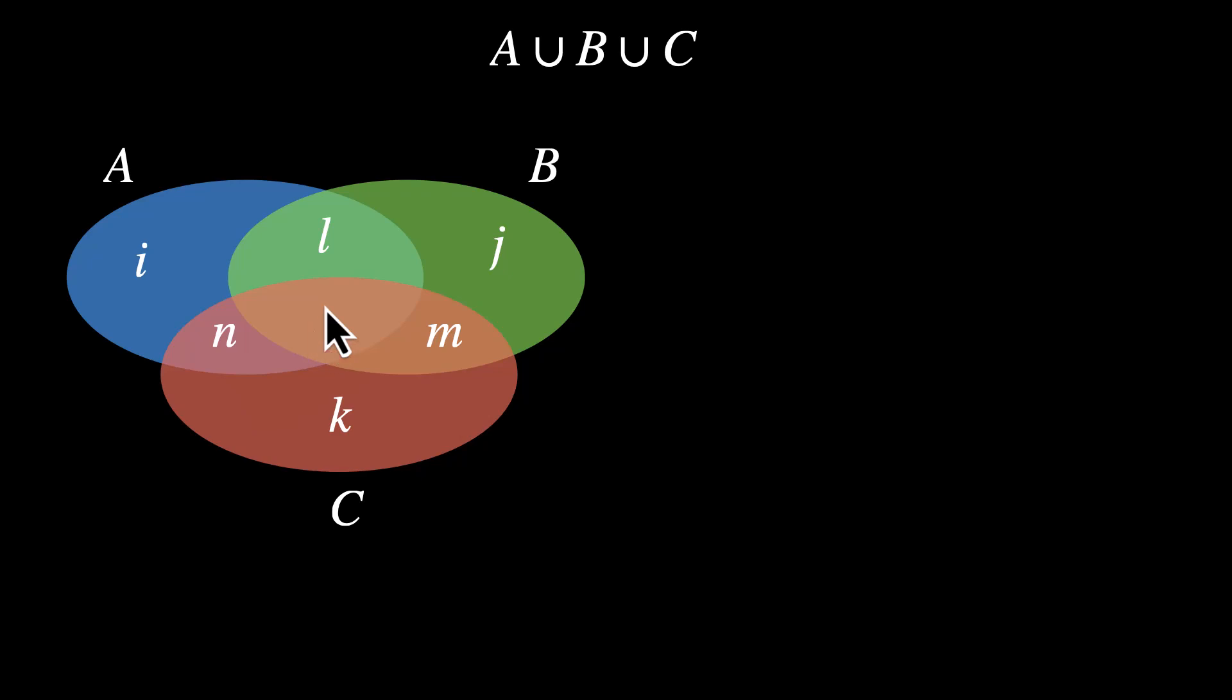And finally, we have this region, the central region O. This is the overlap of all three. This is the region where we have A and B and C. So all three. Now if you write A union B union C using these letters, we have all of them I plus J plus K plus L plus M plus N plus O. So we have these seven regions.